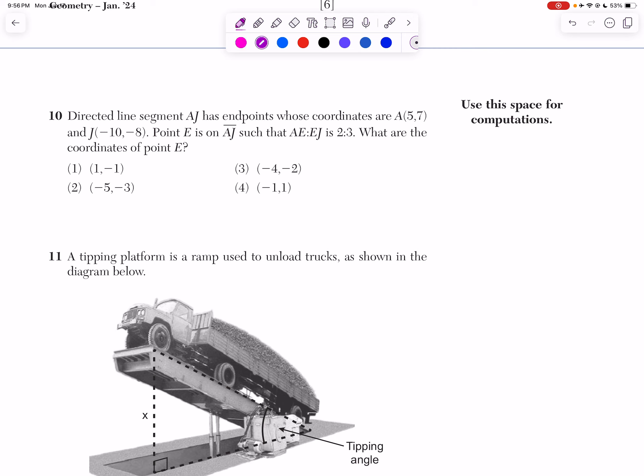So whenever you do this question, I would just recommend doing this setup. Basically doing X1 plus your distance ratio times (X2 minus X1). And then when finding your Y values, you're going to do the exact same thing, but this time use your Y values. So Y1 plus your distance ratio times (Y2 minus Y1).